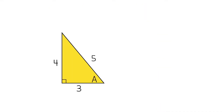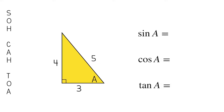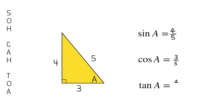Let's use Sokatoa to find the sine, cosine, and tangent of angle A in this triangle. For sine of angle A — SOH, opposite over hypotenuse — the opposite leg from angle A is 4, and the hypotenuse is 5, so sine of angle A equals 4 over 5. For cosine — CAH, adjacent over hypotenuse — the adjacent leg is 3 and the hypotenuse is 5, so cosine of A is 3 over 5. For tangent — TOA, opposite over adjacent — we get 4 divided by 3.